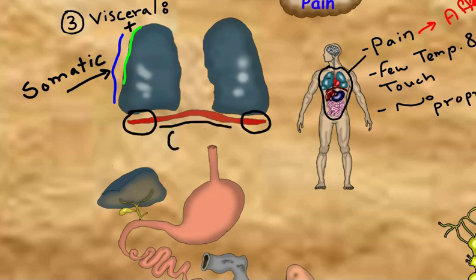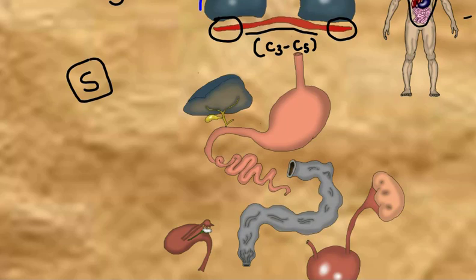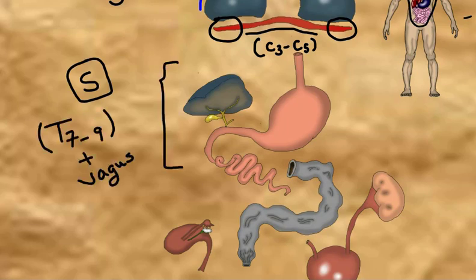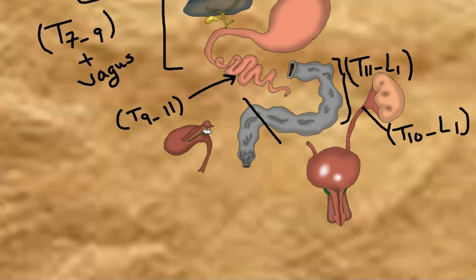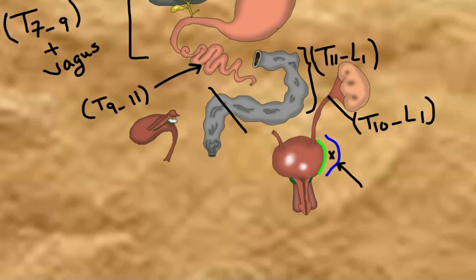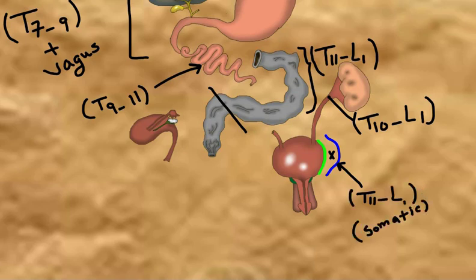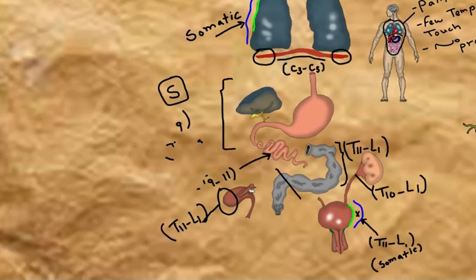C3 to C5 supply the diaphragm. Intra-abdominal viscera are supplied by both the sympathetic splanchnic nerves from T1 to L1 and the vagus nerve, which carries parasympathetic impulses. T10 to L1 supplies the kidneys and ureters. T12 to L1 has somatic innervation, producing sharp fast pain in the parietal peritoneum. T11 to L1 also supplies the fundus of the uterus in females.